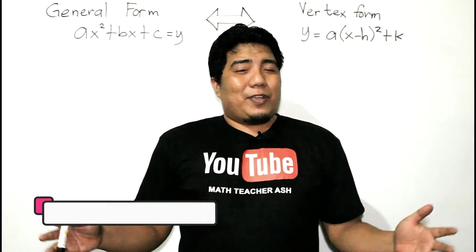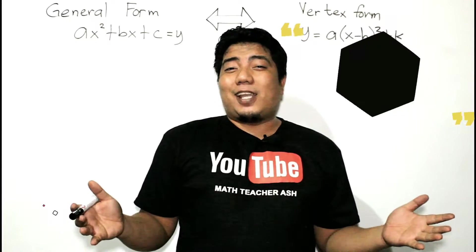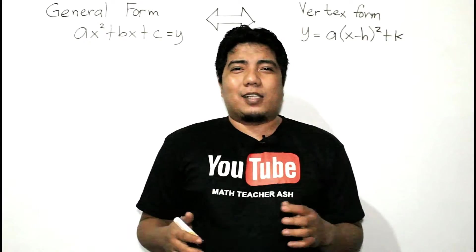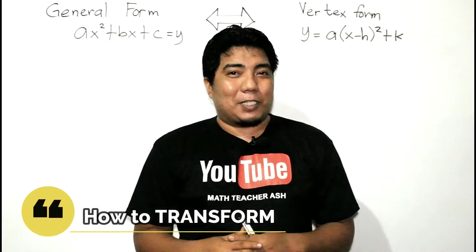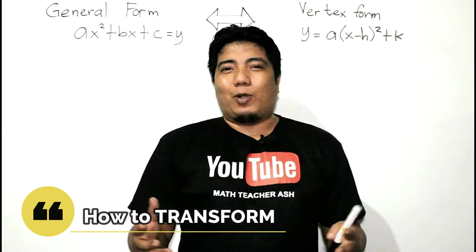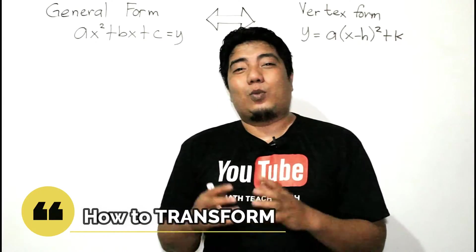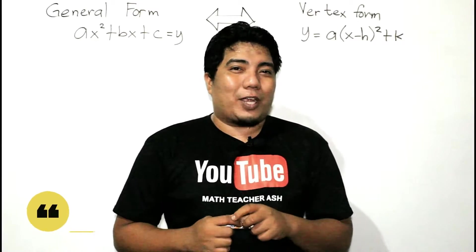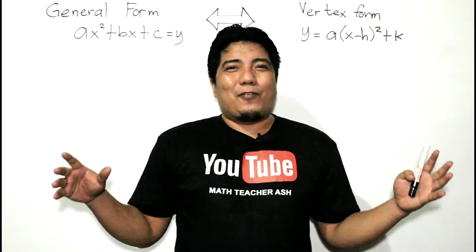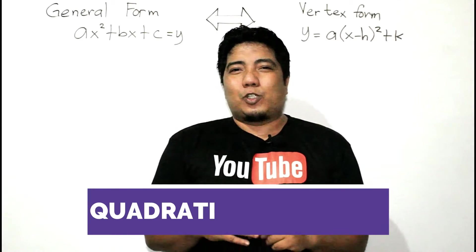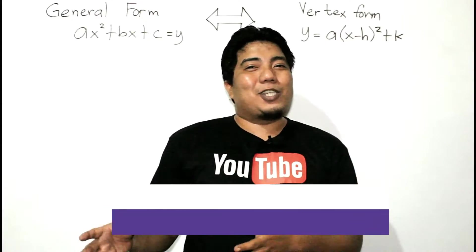How are you doing, math learners? This is your free access math teacher Ash, and welcome to ML with Sir Ash. For today's lesson, we're going to discuss how to transform general form — known as AX squared plus BX plus C equals Y — to the vertex form Y equals A times the quantity X minus H squared plus K. These are the two different forms of quadratic functions. So, how do we go from general to vertex and vertex to general?